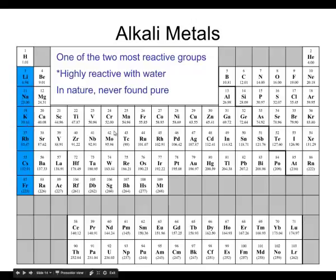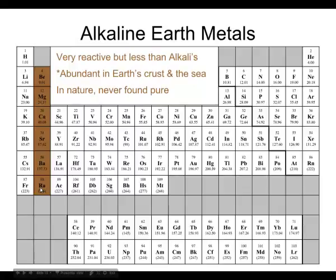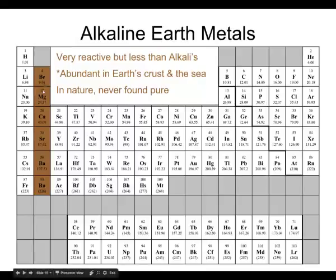Next to the alkali metals are the alkaline earth metals. We call them alkaline earth metals because they still tend to form basic — not acidic, but basic — solutions in water. These are things we often find in the earth's crust and the sea. Column two is the alkaline earth metals.